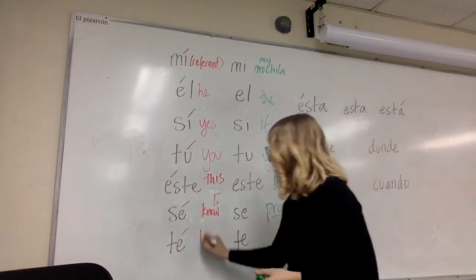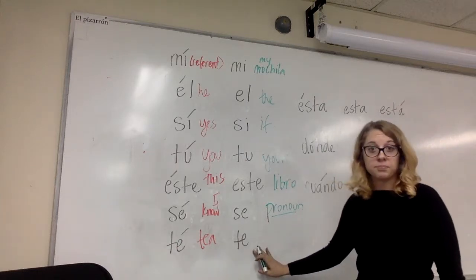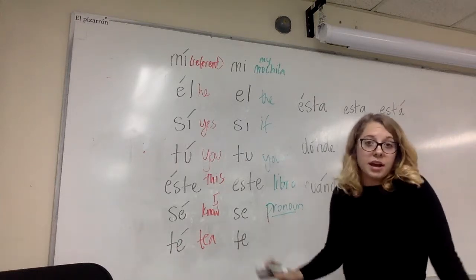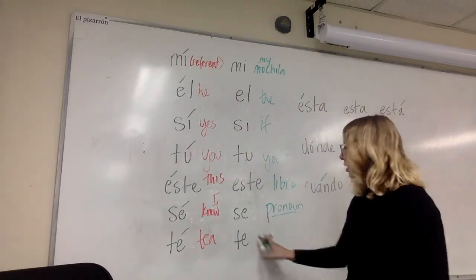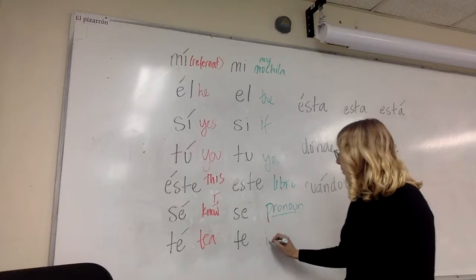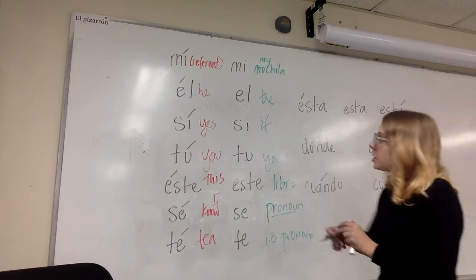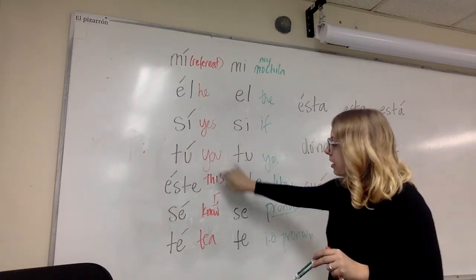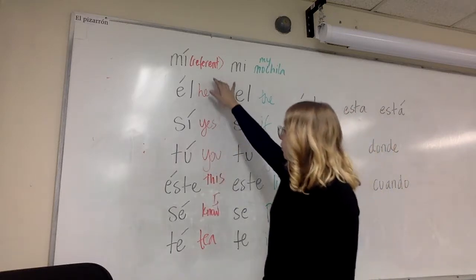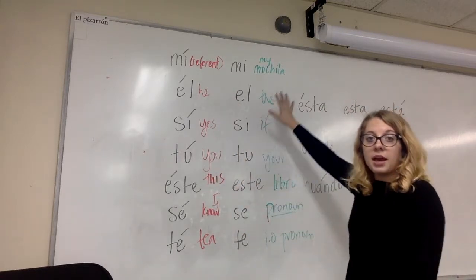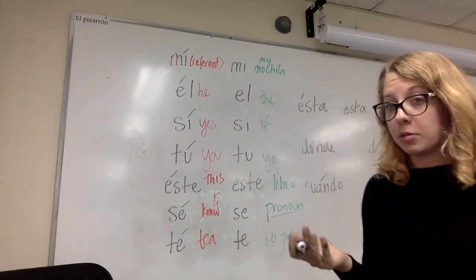'Té' with an accent means 'tea' — like 'tomo té.' But 'te' without an accent is a pronoun, as in 'te gusta escuchar música' — 'you like to listen to music' — referring to the indirect object pronoun. You might notice some patterning here: subject pronouns and things that stand alone tend to have accents, while possessive adjectives and other modifiers don't. Unfortunately, it's mostly just memorization.